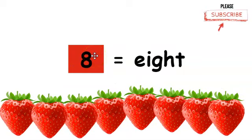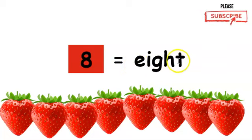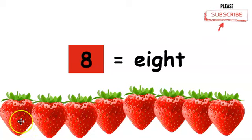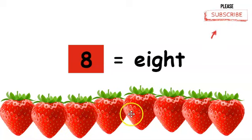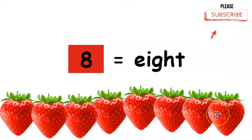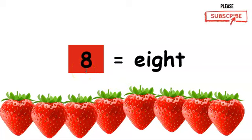This is the number eight. This is how you write eight. Let's count how many strawberries we have. One, two, three, four, five, six, seven, eight. There are eight strawberries. Eight.